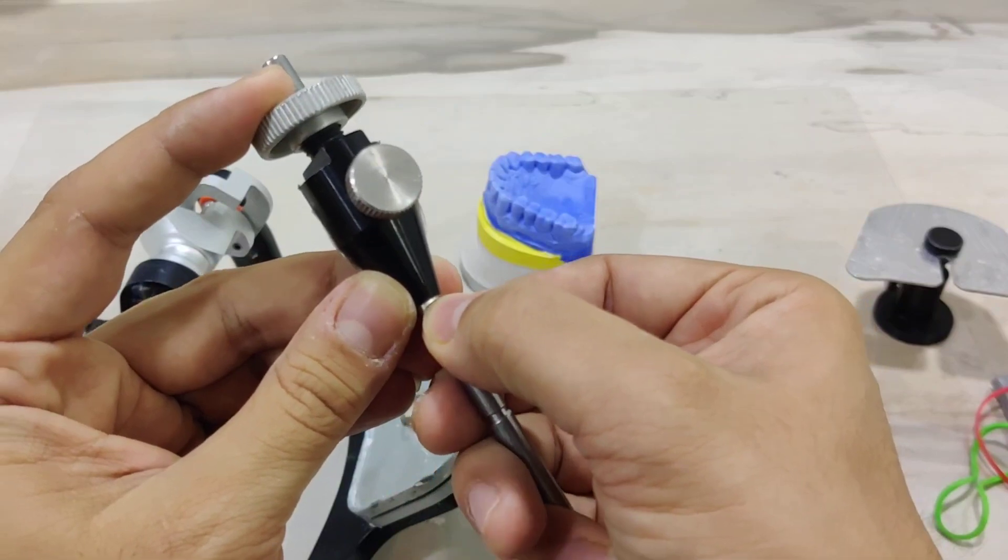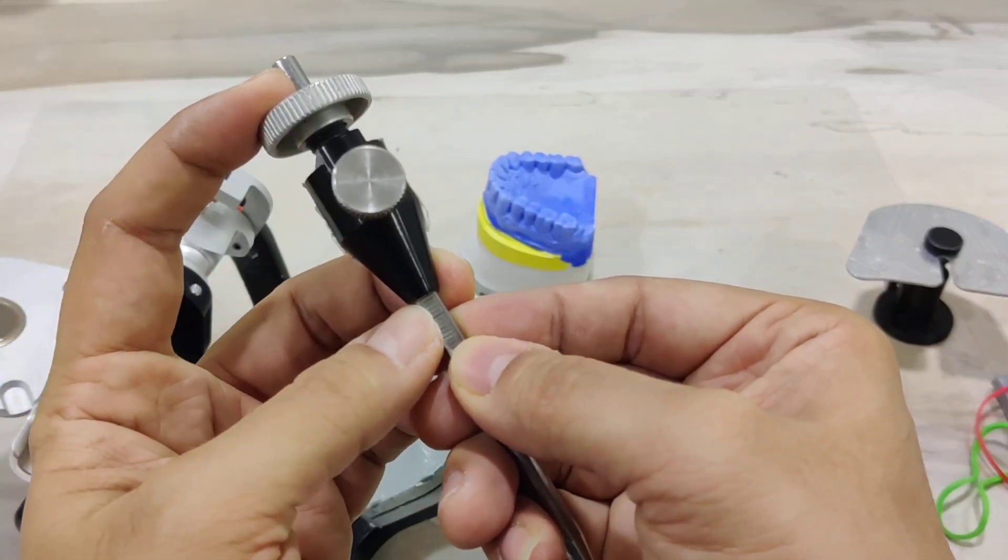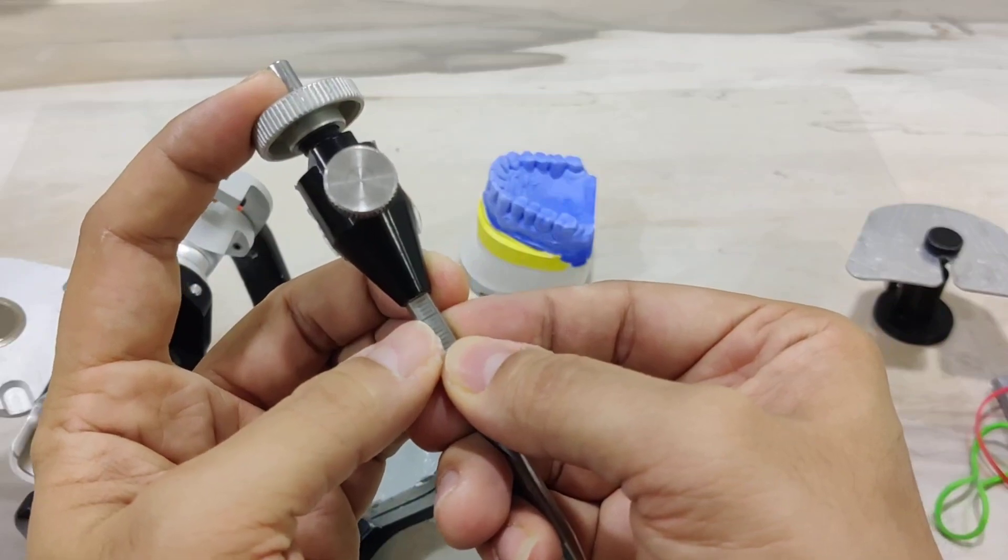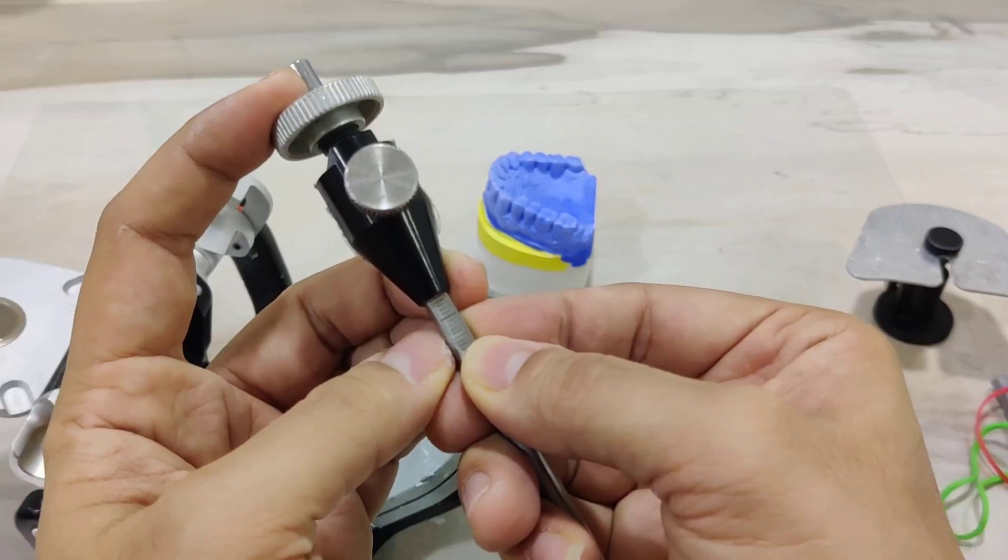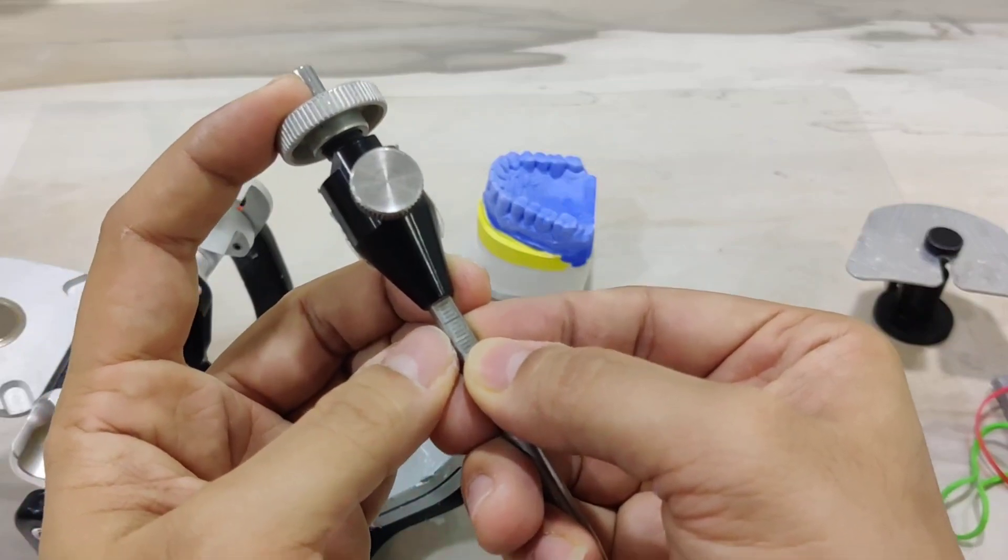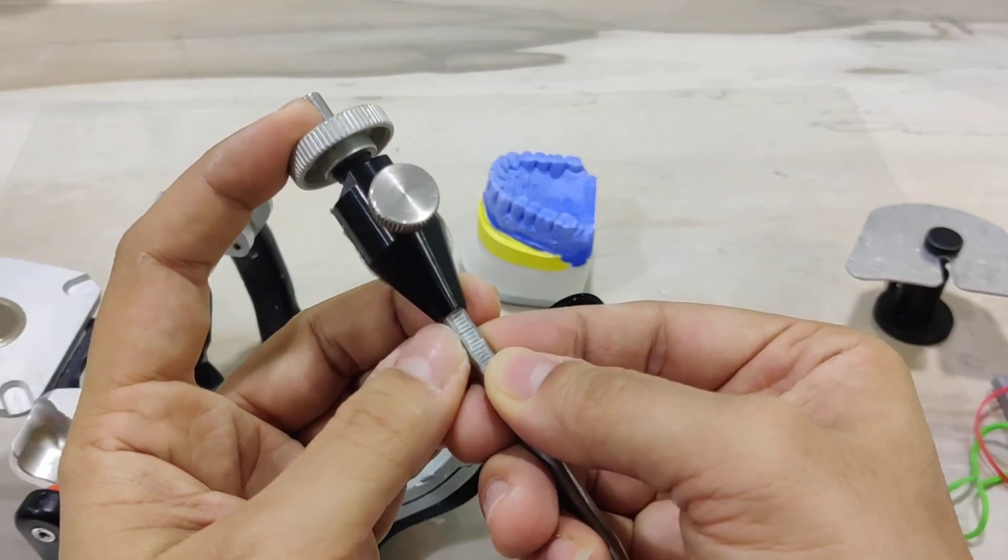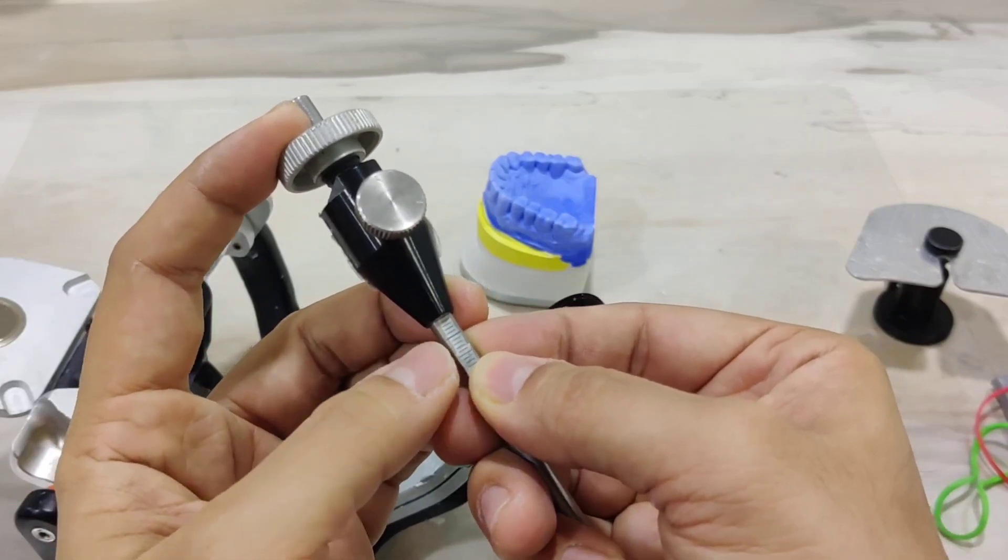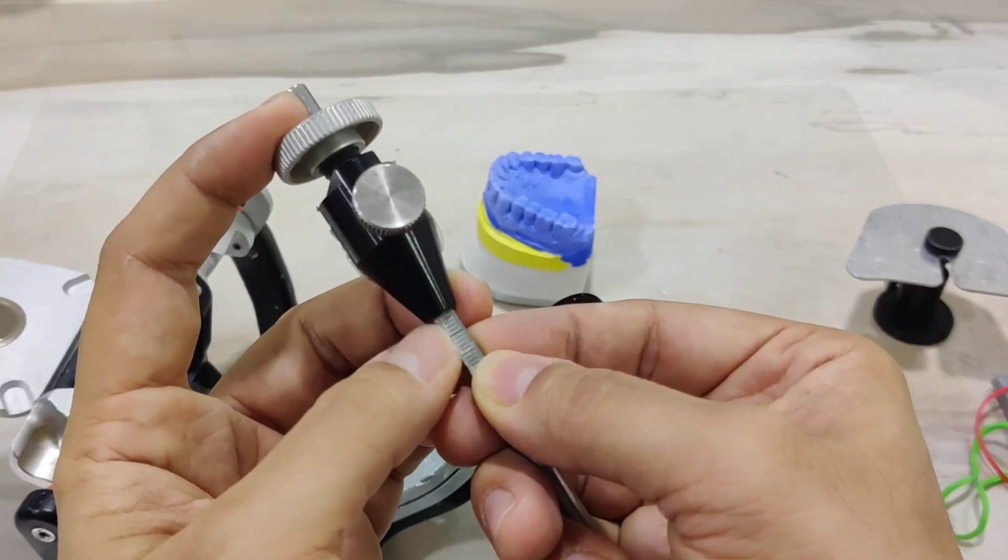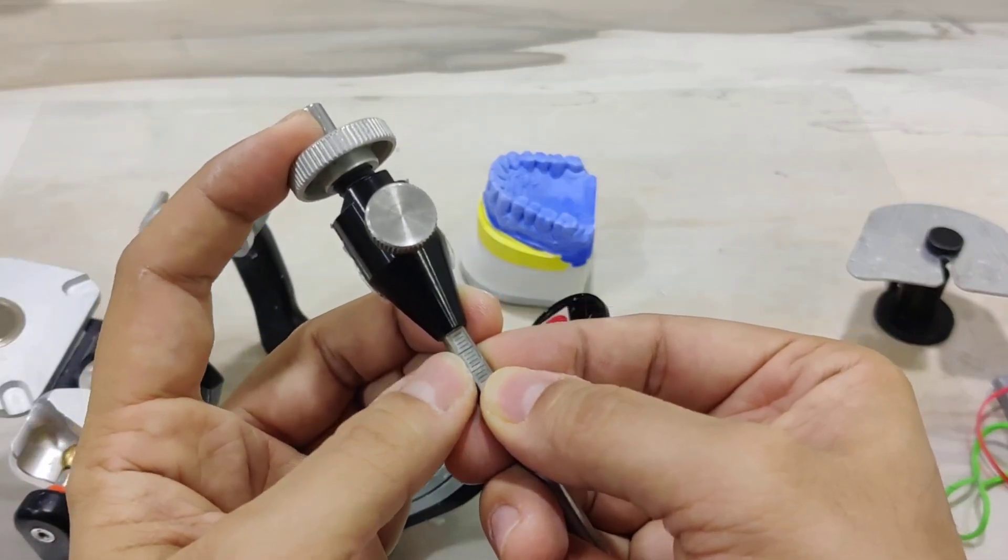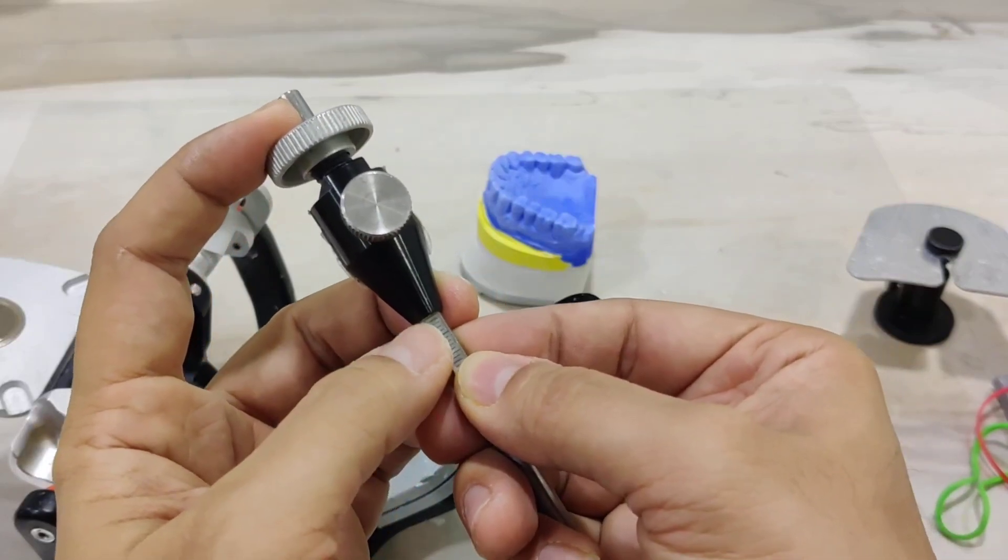I now take my incisal pin. Remember this incisal pin has a lot of markings here. I will always do my mandibular mounting by keeping the pin at plus five, which means five lines above zero. The reason I do this is because I have recorded the CR with the help of the unwind in the patient's mouth. The unwind has a five millimeter discluding table, so I compensate for that five millimeters by mounting the mandibular cast at an additional five millimeter.